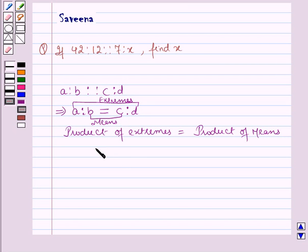This implies product of extremes which means A into D, AD, is equal to product of means which is B into C, that is BC. AD is equal to BC.